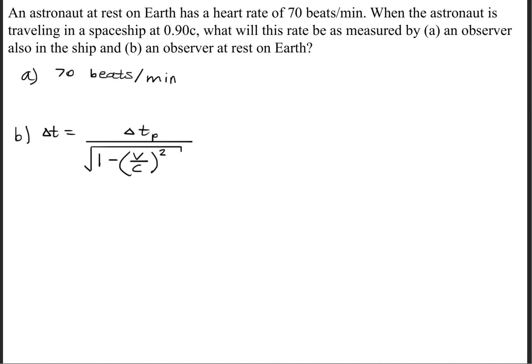Now for part B, we're going to use the time dilation formula. We have time dilation equal to the proper time divided by 1 minus the velocity over the speed of light squared.